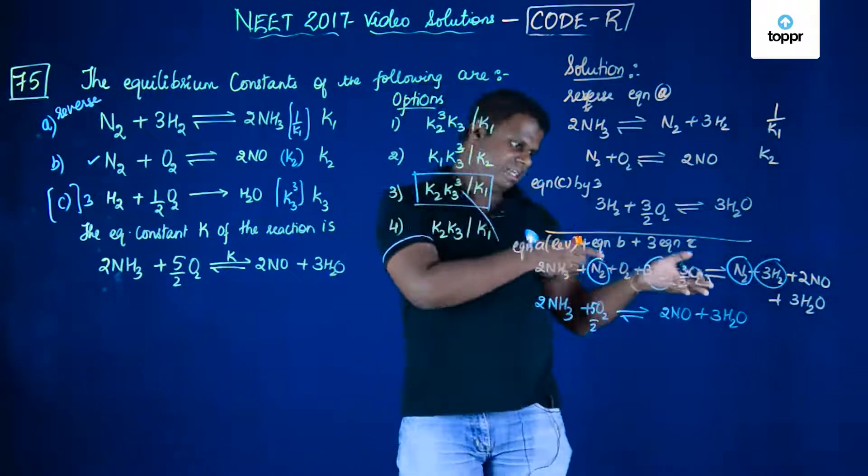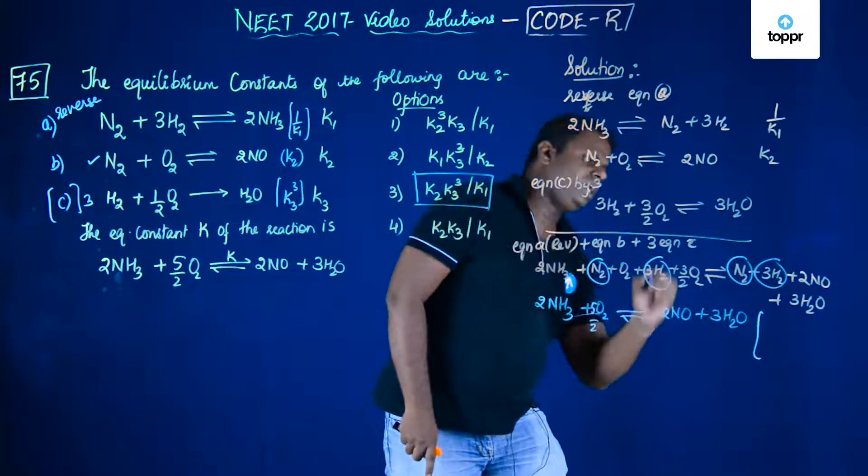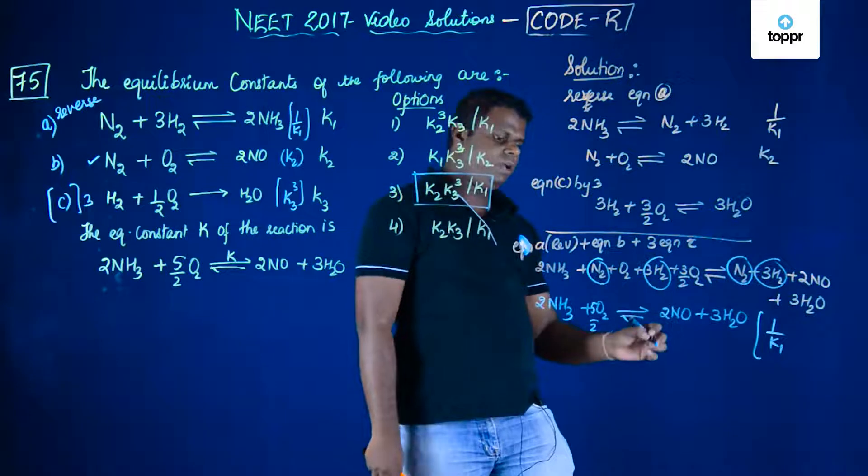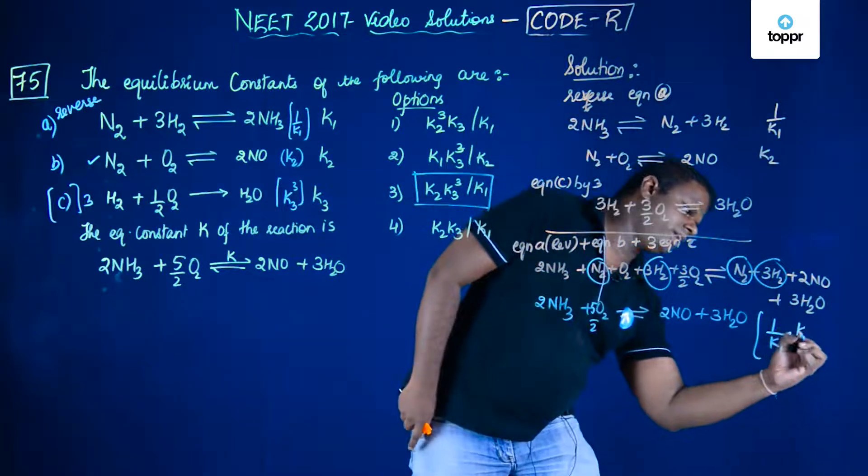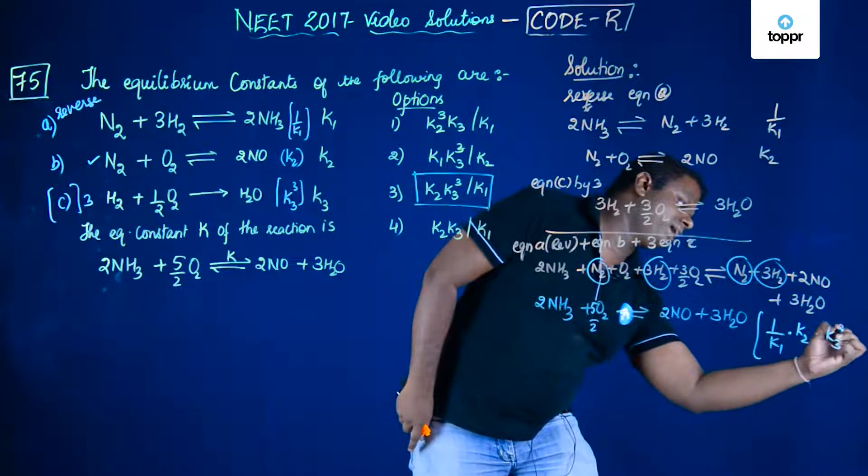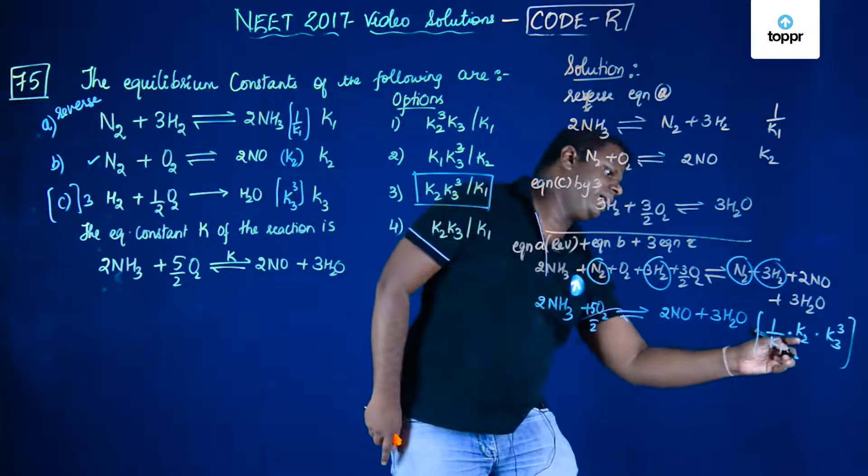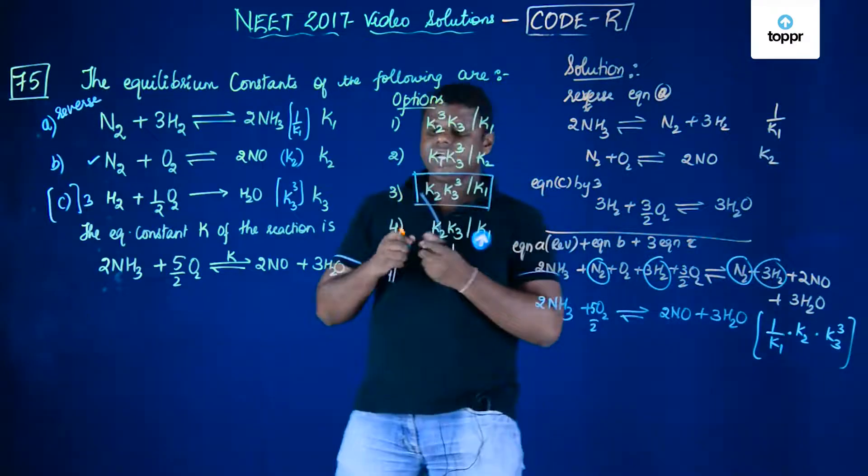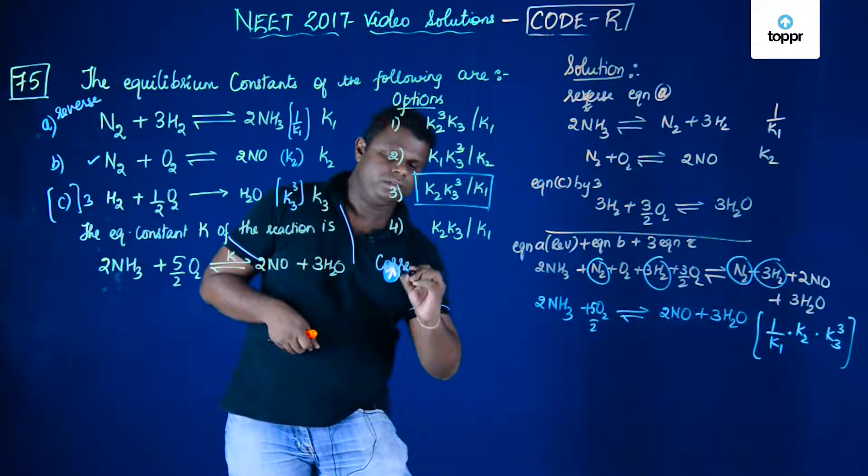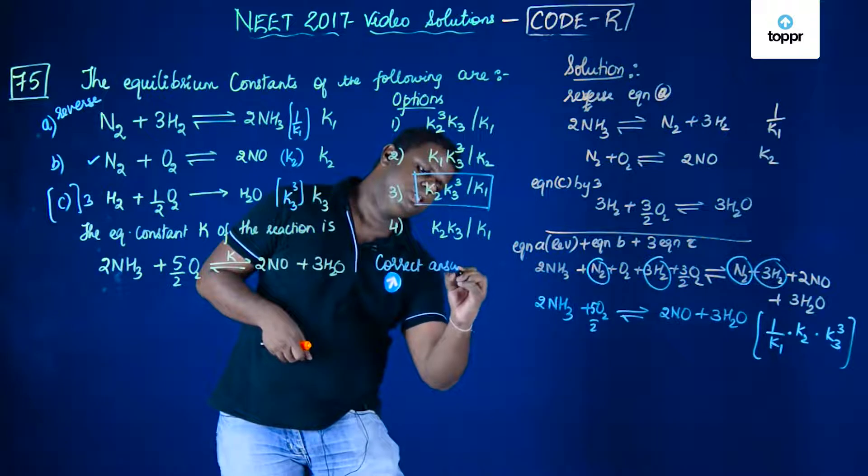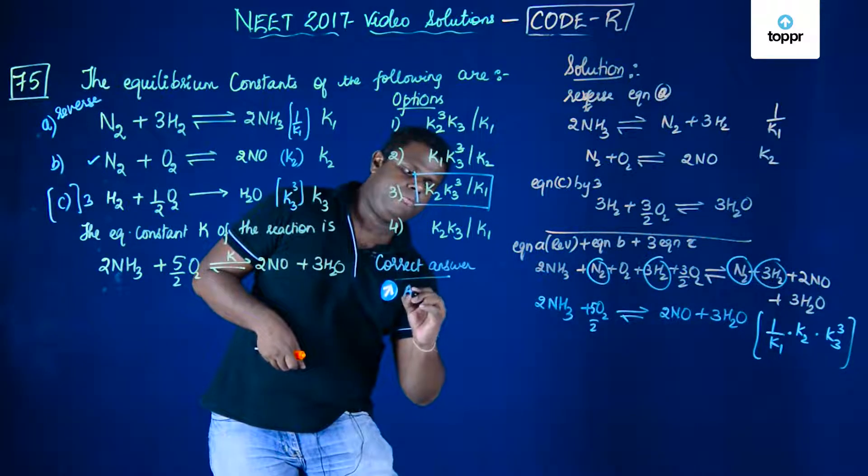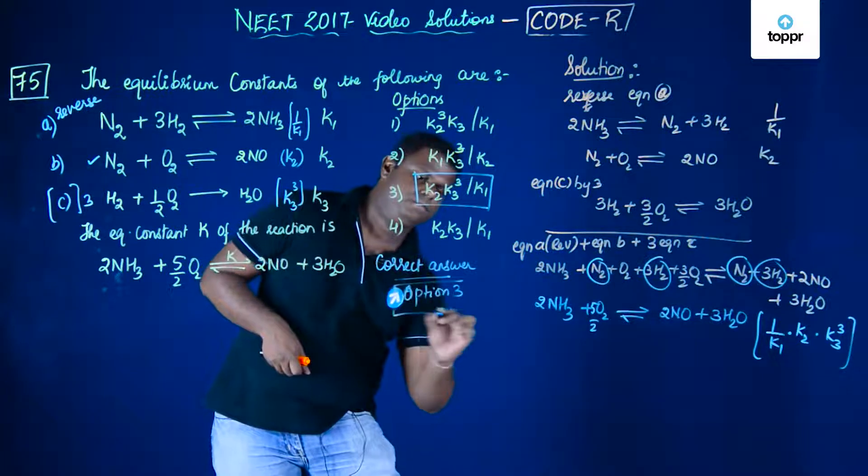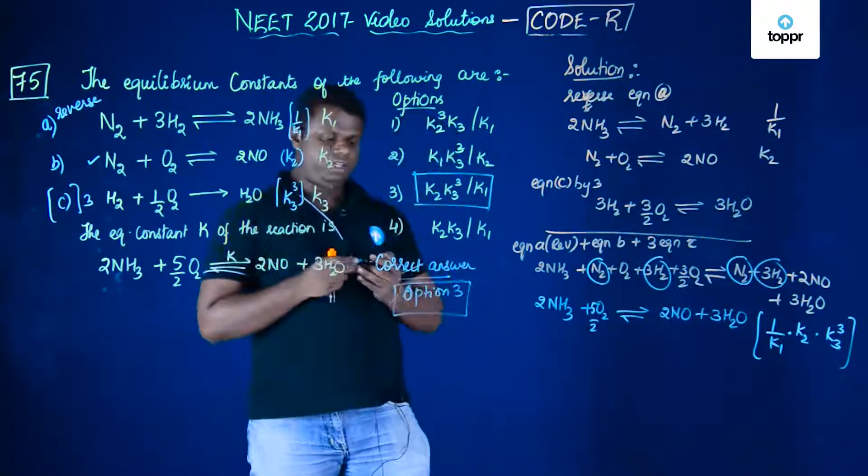You could use this shortcut method. You have reversed equation 1, so it is equation A, that is 1 by k1. k2 is kept as it is, and k3 is multiplied 3 times, so it is going to be k2 k3 cube divided by k1, which is the required answer. The correct answer to this particular question is option 3.